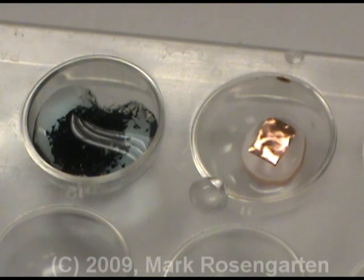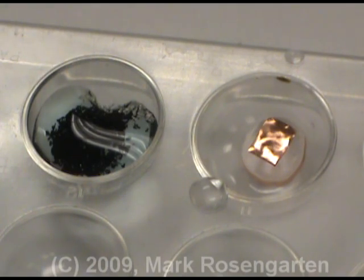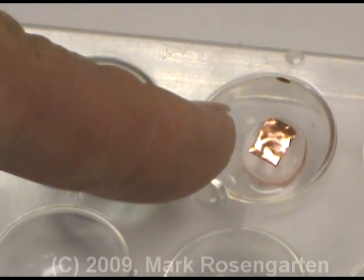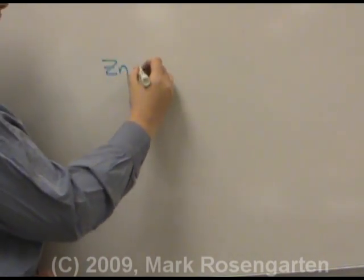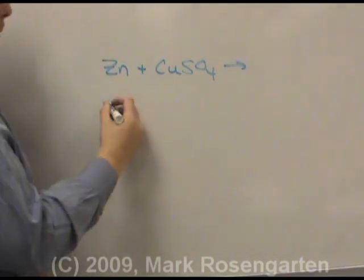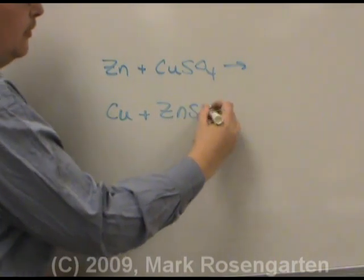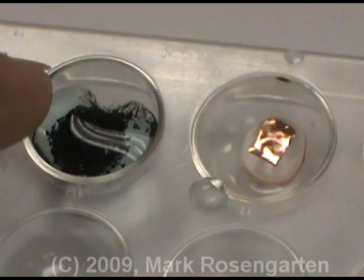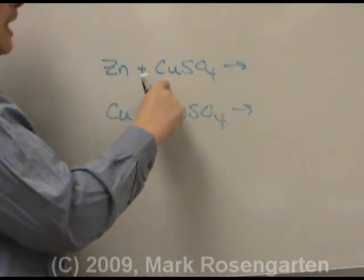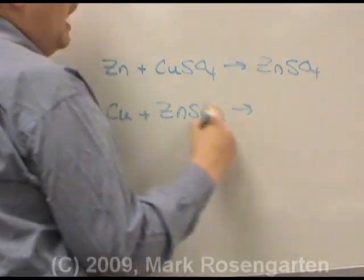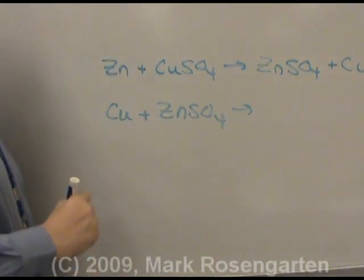The zinc has turned from being metallic to being black. That black is actually microscopic crystals of copper that reflect light in every direction, making it appear black because the crystals are so small. The copper has been completely untouched — the zinc replaced the copper, but the copper was unable to replace the zinc. We tried to carry out two single replacement reactions: zinc plus copper sulfate, and copper plus zinc sulfate. The zinc replaced the copper; zinc, being the more active metal, formed zinc sulfate, and the copper formed microscopic crystals that appeared black.